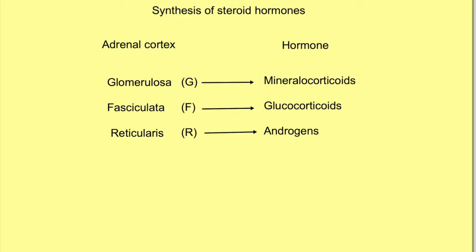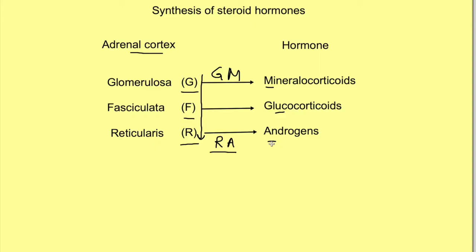Synthesis of adrenal steroid hormones occurs in three layers of the adrenal cortex. From outermost to inner side, these layers are zona glomerulosa, zona fasciculata, and zona reticularis — that is GFR. Zona glomerulosa synthesizes mineralocorticoids, zona fasciculata synthesizes mainly glucocorticoids, and zona reticularis synthesizes androgens. A useful mnemonic: G synthesizes M like a general manager, and Ra (the sun god) reminds us that reticularis synthesizes androgens.